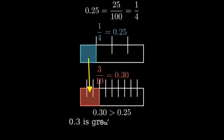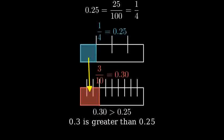Therefore using both decimal and fractional representations, we can conclude that 0.3 is greater than 0.25.